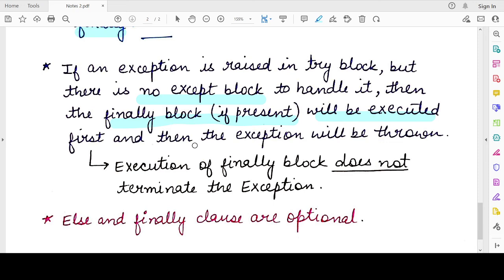That means the program will eventually terminate and you might get a generic message from the interpreter on the output screen. So in no case will the execution of a finally block just terminate the exception. The exception will always be there no matter the finally block has been executed or not.